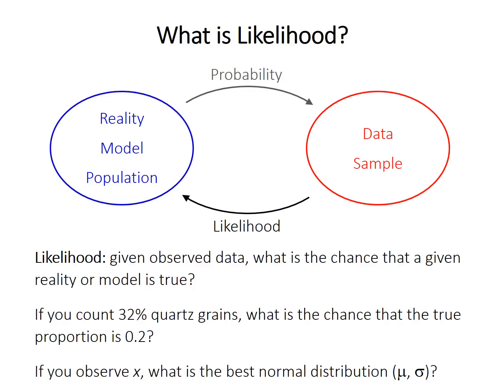Or if we observe some data x, what are the best normal distribution parameters mu for the mean and sigma for the standard deviation to describe that distribution? So that's likelihood.